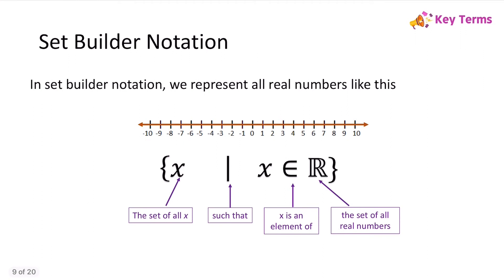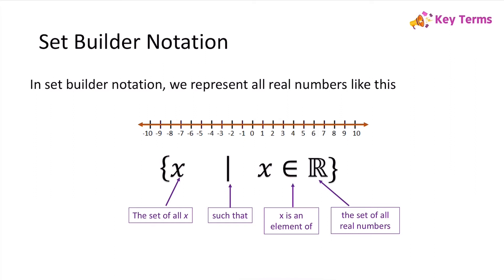Set builder notation also gives us a way of representing a situation where we have all real numbers. You can see in this number line we're including all real numbers. So we would say this is the set of all x such that x is an element of the set of all real numbers — using the element-of symbol — because a set of all real numbers is also a set of numbers, and each member is an element of that set.